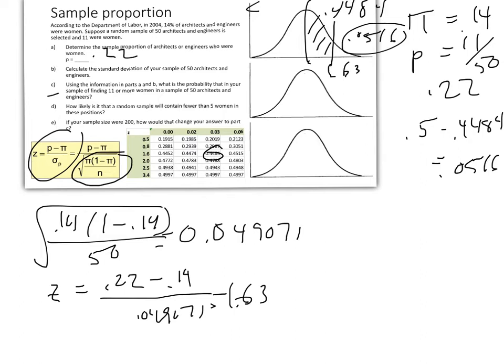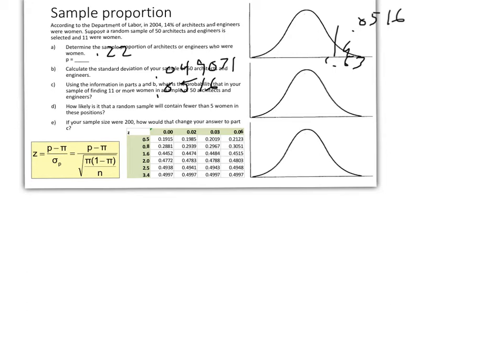How likely is it that a random sample will contain fewer than 5 women in these positions? If our result were instead of 11 here—I'm going to pause and erase some of this so we have room to write. I've written down the answers we've calculated so far, and now we're on part D. They're saying, how likely is it that our result will contain fewer than 5 women? So now we've got a new sample proportion, which would be 5 out of 50, and that's going to be 10%.